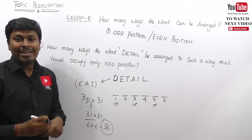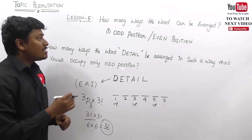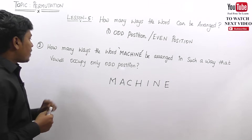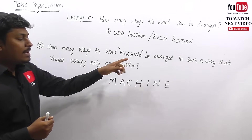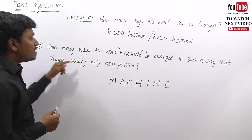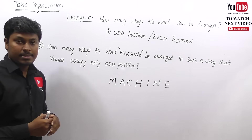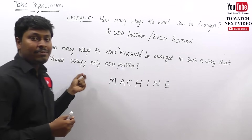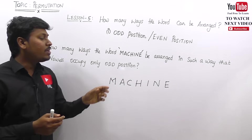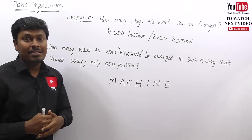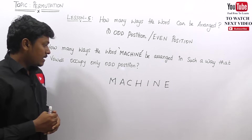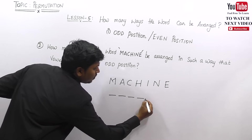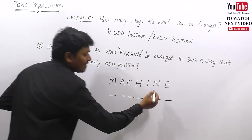Let me move on to question number two. How many ways can the word MISSION be arranged such that vowels occupy only odd positions? They have given the word MISSION and we need to place vowels only in the odd positions and find how many ways the word can be arranged.